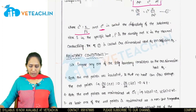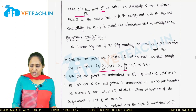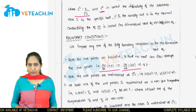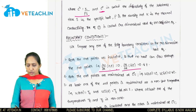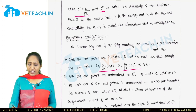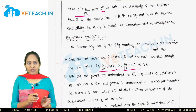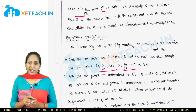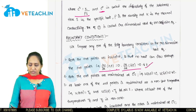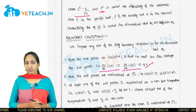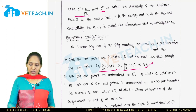The boundary conditions are now defined. We have initial conditions as well. One type of boundary condition is ∂u/∂x = 0 at the end points, meaning no heat can flow through the end points — both end points are insulated.